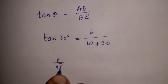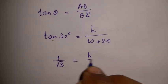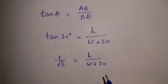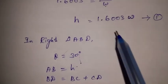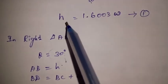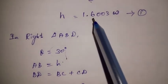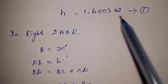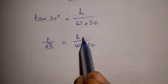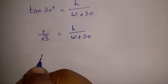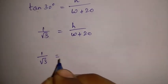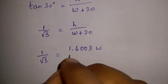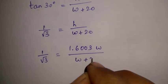Tan 30° equals 1 over root 3, so 1/√3 = H divided by (W + 20). Substituting H = 1.6003W from Equation 1, we get 1/√3 = 1.6003W divided by (W + 20).